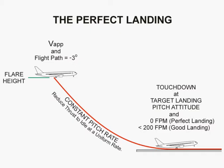The key to a perfect landing is arriving at the target landing pitch attitude shortly before touchdown. Minimum landing distance is achieved by rotating to the target attitude at a constant pitch rate, beginning at flare height.